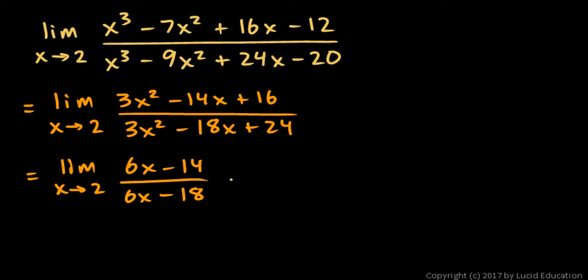We can take this limit by substituting in 2 for X. So this is 6 times 2, that's 12 minus 14 over 12 minus 18. So that gives me negative 2 over negative 6, which simplifies to positive 1 third.